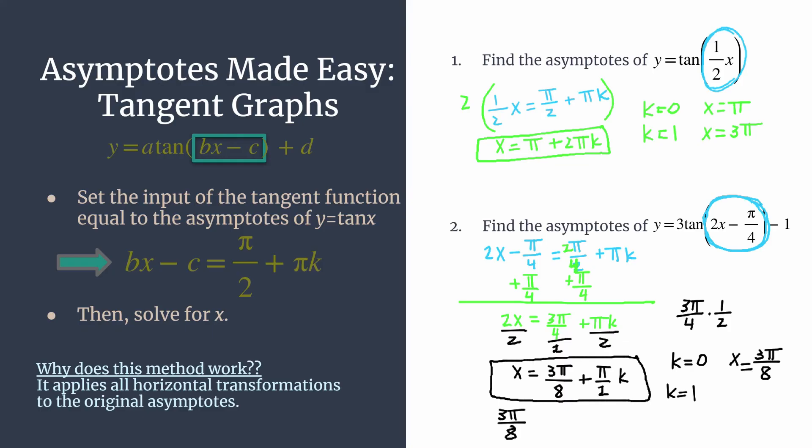If you wanted to find the next asymptote to the right, just let k equal one. So you would end up with three pi over eight plus pi over two times one, of course, is pi over two. We would need a common denominator here, so we would rewrite pi over two as four pi over eight. And that would get us the asymptote that's one period away from the original one to the right. So it would be at x equals seven pi over eight.